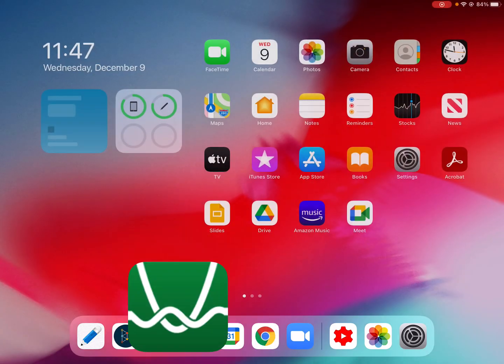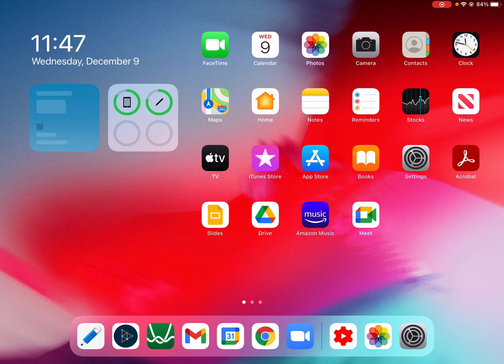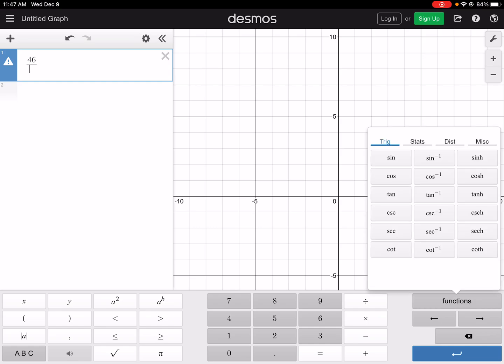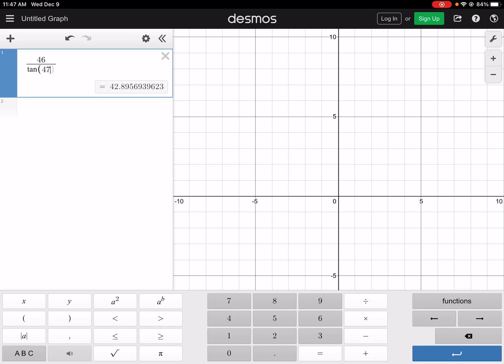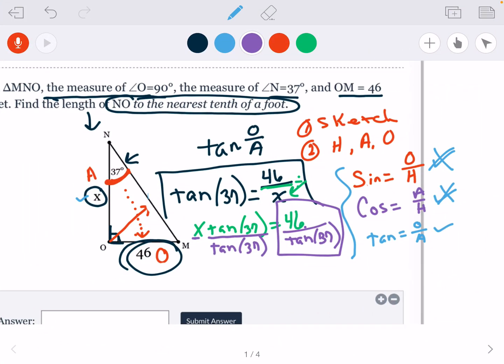In decimals, I need to make sure I'm in degree mode. It's 46 divided by tan 37. 46 divided by tan. Remember to get your ratios, you click the functions over here on the right, and you see the trig ratios have a tan, and it was 37. So 42.9 rounded to the nearest tenth. So this answer, X would be 42.9.